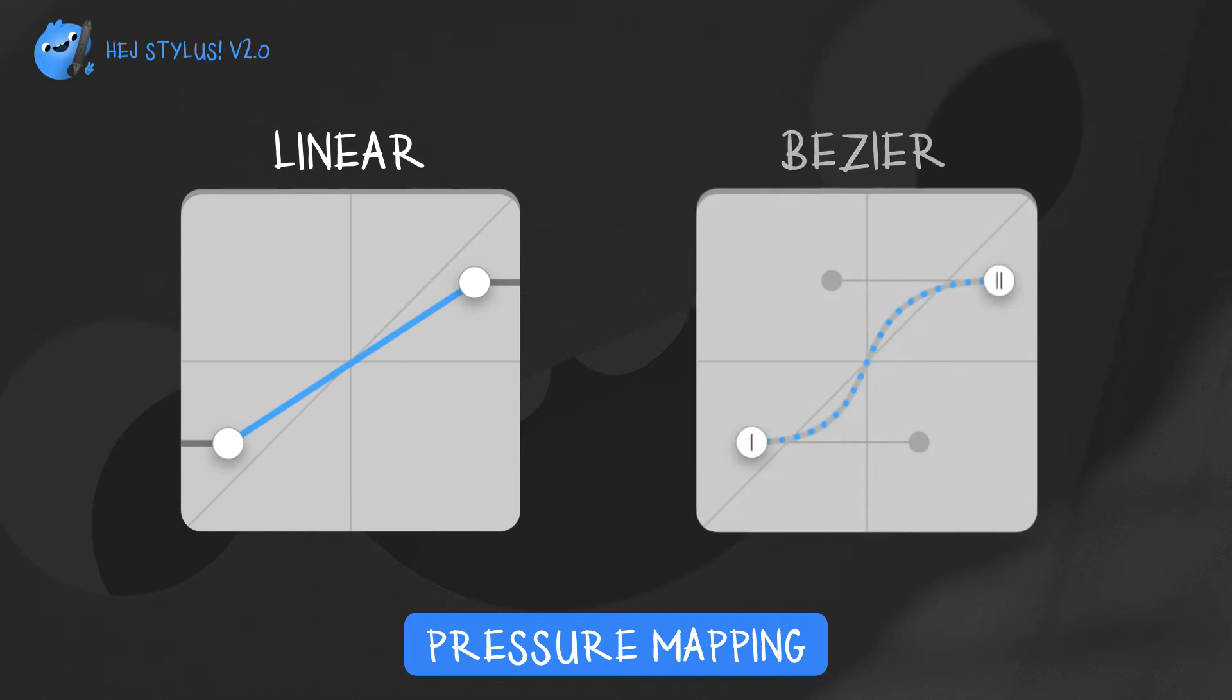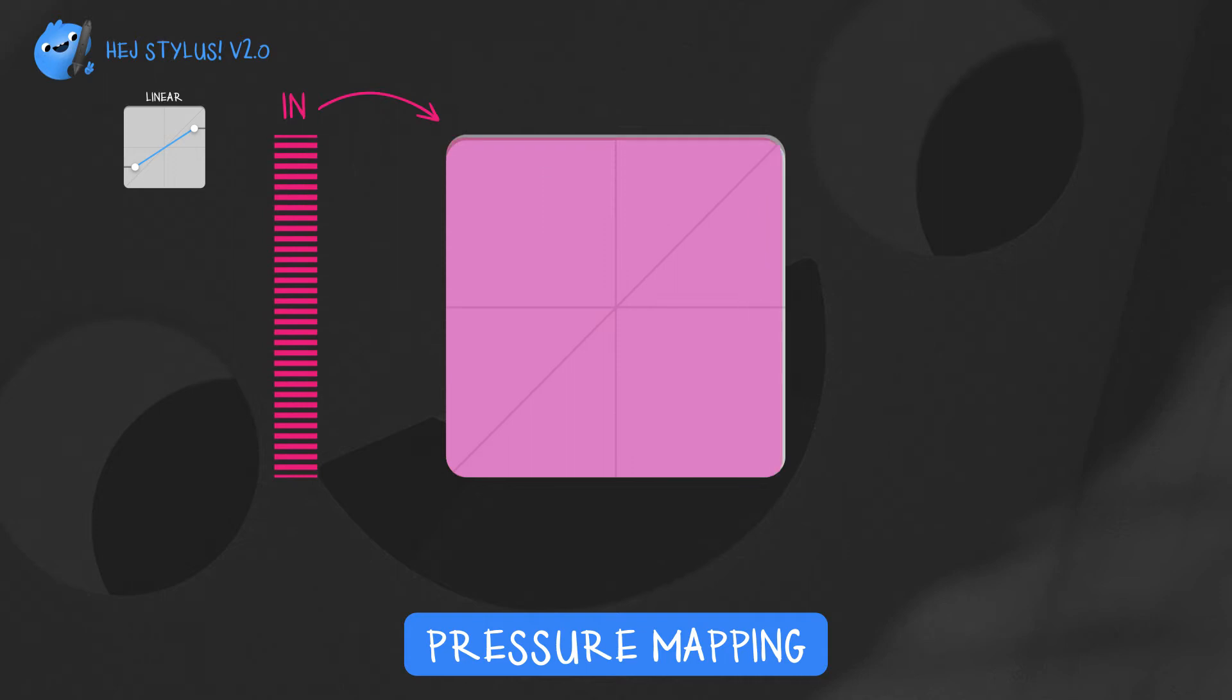Let's start with linear transfer. The graph resembles the pressure that your tablet produces. The dots and the line resemble how this pressure is manipulated.